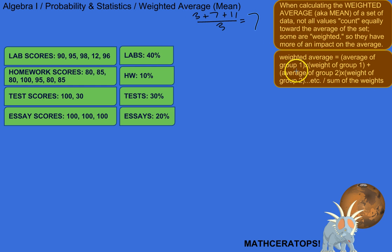So you can make your weighting anything you want. What matters is proportion. So for example, I've got a science class here, and there's four different types of assessments. There's labs, there's homework, there's tests, and there's essays. So labs are going to count for 40% of your grade. Homework's going to count for 10%. Tests are going to count for 30%. And essays are going to count 20%.